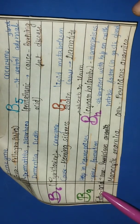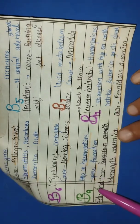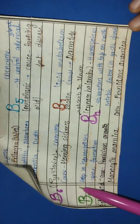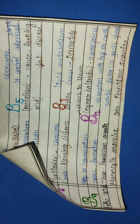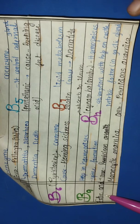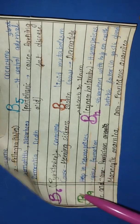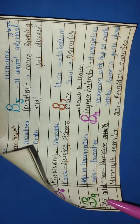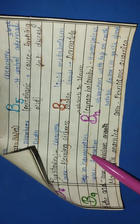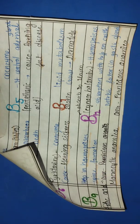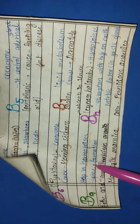Then vitamin B9. This helps to make blood in our body. Its scientific name is folic acid. If it is not in our body, blood will not form properly. It causes macrocytic anemia.